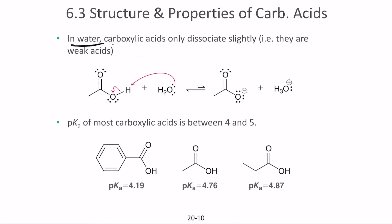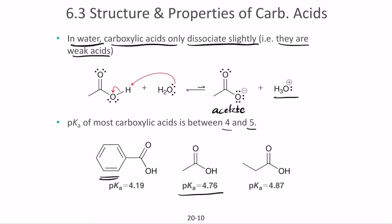In water, carboxylic acids dissociate only slightly because they are weak acids. For example, acetic acid in water forms acetate ion and H3O+. The pKa of most carboxylic acids is between 4 and 5; acetic acid is about 4.76. Electron withdrawing groups increase acidity, while electron donating groups decrease acidity.